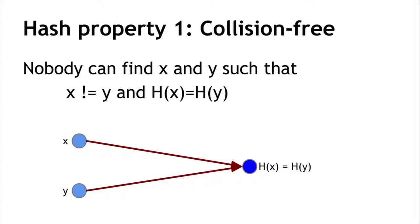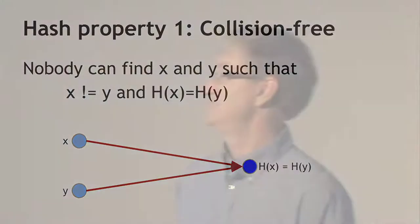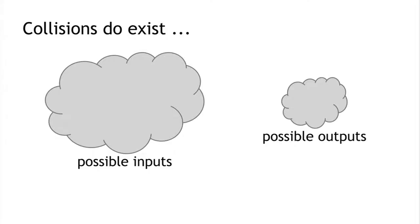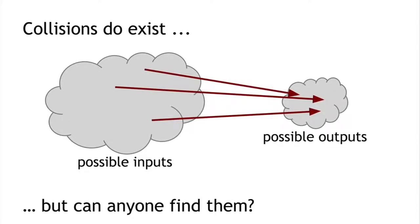I said 'nobody can find' — I didn't say there is no collision, because if you think about it, there has to be a collision. Collisions do exist. Over here on the left are all possible inputs, which can be a string of any size. Over here are all possible outputs, which must be a 256-bit string — only 2^256 possibilities. Since there are more inputs than outputs, multiple inputs must map to the same output. So collisions do exist; the question is whether any are findable by regular people using regular computers.